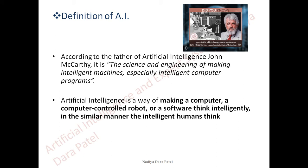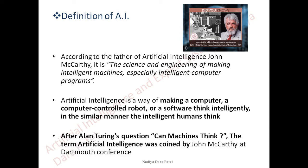Artificial intelligence is a way of making a computer, a computer-controlled robot, or a software think intelligently in a similar manner to how intelligent humans think. The idea behind AI was making machines think like humans — developing from computer to machine to robot. The term artificial intelligence was coined by John McCarthy at the Dartmouth conference.